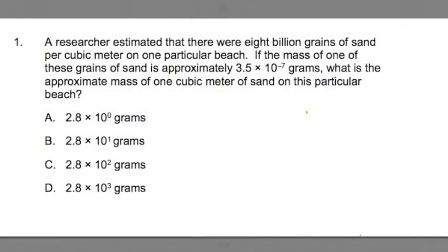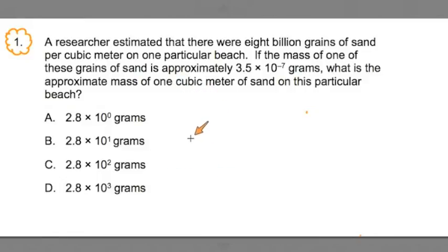Hi team, this is Chris Abraham from Go Academy. Today I'm going to do number one on the new general curriculum math subtest. It involves scientific notation. Scientific notation we use as a way to represent really big numbers and really small numbers. So get ready for that in this video. I'm going to start by reading over the problem and then we'll work through some of the math behind it. Let's start.